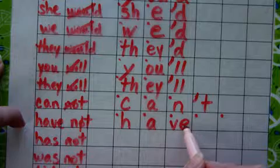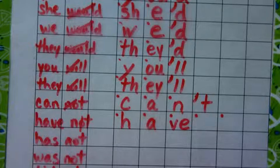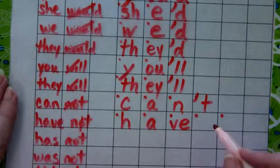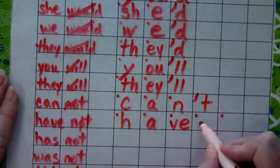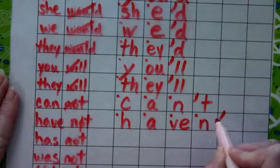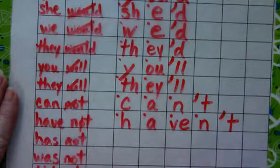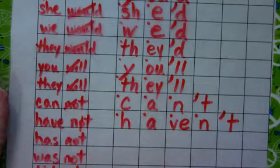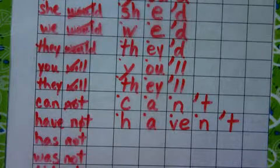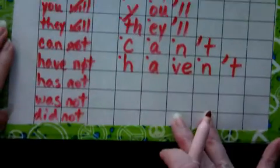Because the E does not make its own sound, it does not get its own box, and so it shares the box with the V: have. Haven't — the apostrophe tells you that the O is missing, that's why the apostrophe goes right there.